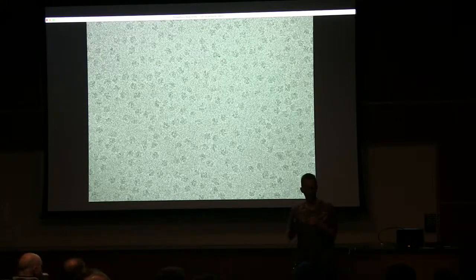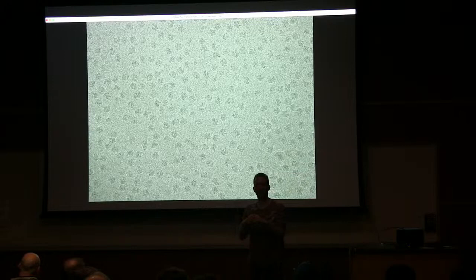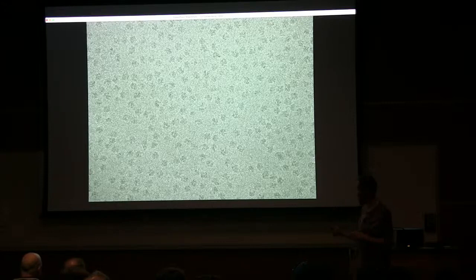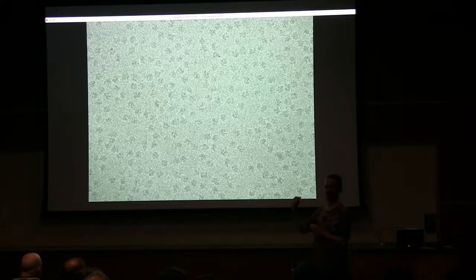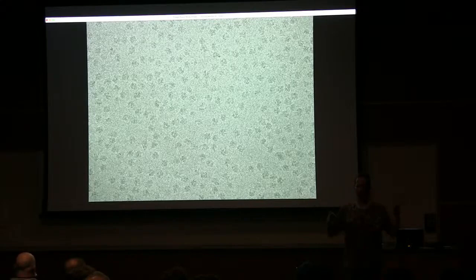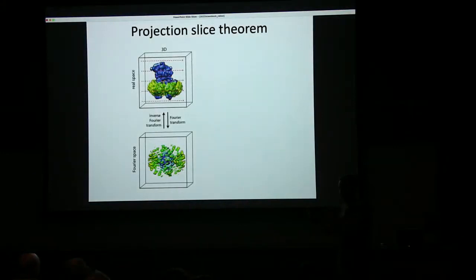The sample is frozen so rapidly in liquid ethane that the water doesn't have time to crystallize into hexagonal ice, but instead forms a vitreous solid state that does not diffract in the electron microscope. We can then do transmission electron microscopy imaging. Each of the grainy little black dots is a two-dimensional projection image of the scattering potential — the current potential of the macromolecular complex of interest — with many of them visible in each field of view.